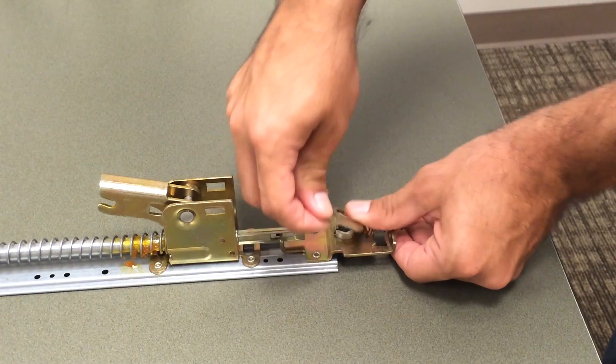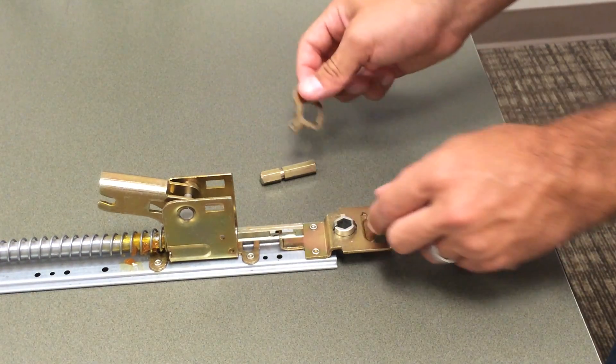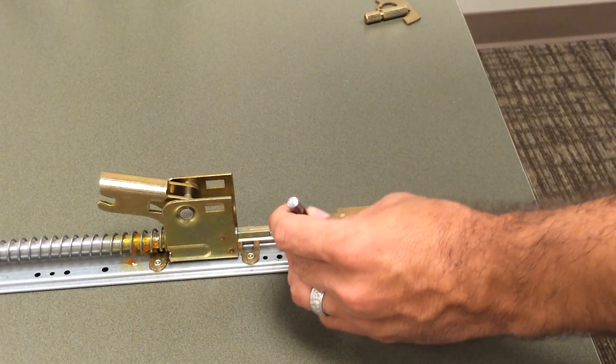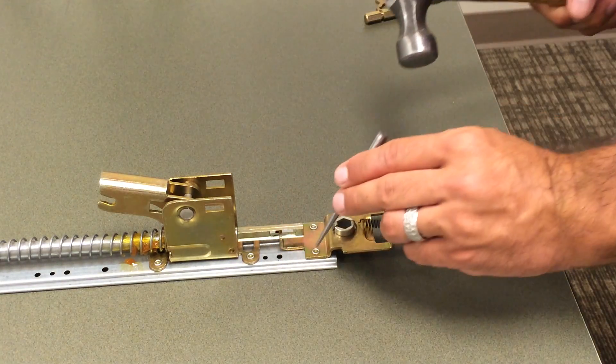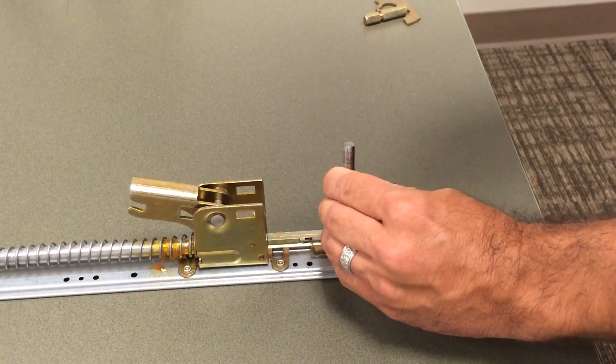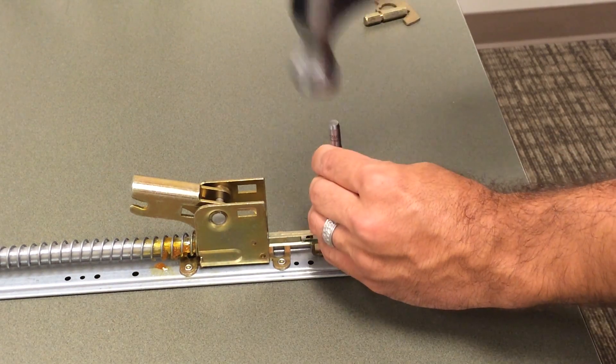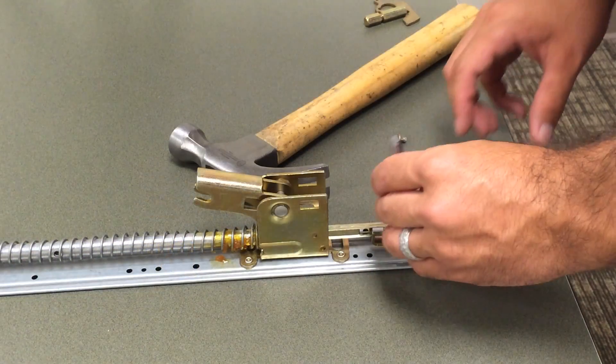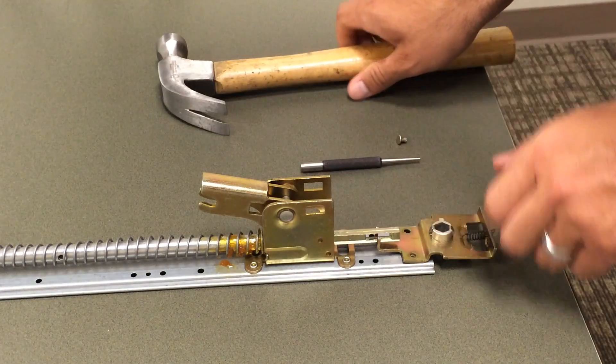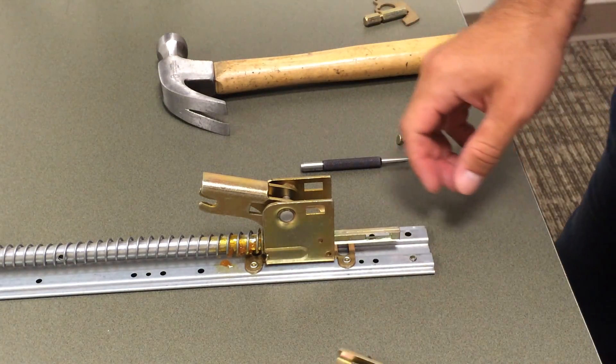You're going to have two options for removing the rivets. The first option, the recommended option, is to use a pin punch with a hammer. You're going to go ahead and give two or three good hits over those rivets. They should just drop right out and you should be able to easily remove the dogging.